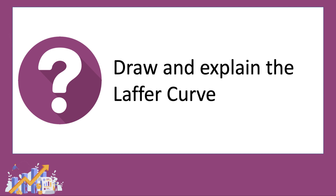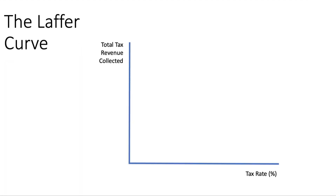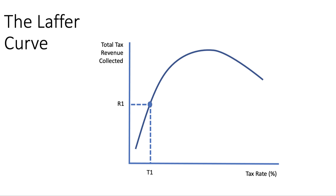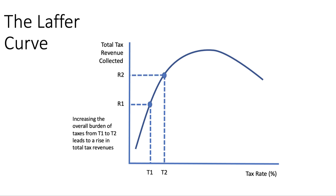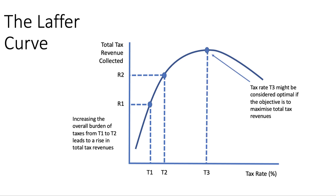If you are asked to draw and explain the Laffer Curve, there are various versions of it. I prefer to put tax revenue on the y-axis and the tax rate as a percentage on the x-axis, though it doesn't really matter. I tend to ignore the fact that at zero tax rates there's no revenue, and at 100% tax rates there's a perfect disincentive to pay tax. The curve suggests that starting with a tax rate of T1%, you might get revenue of R1. Increasing the burden of tax from T1 to T2 causes revenues to go up, and there might be some sort of optimal tax rate of T3 which maximises the total amount collected in tax.